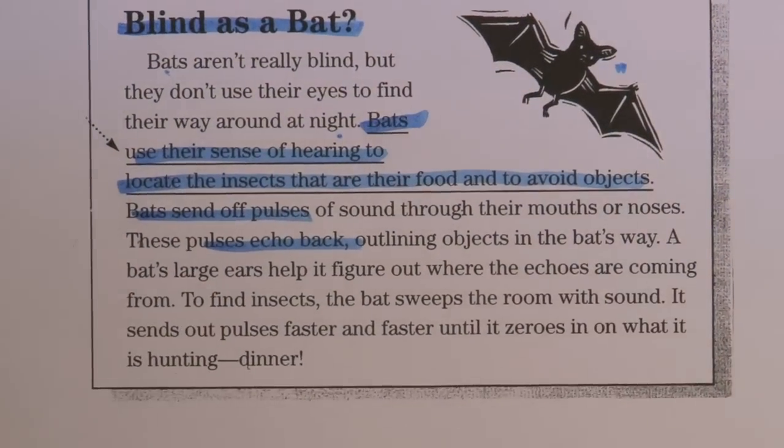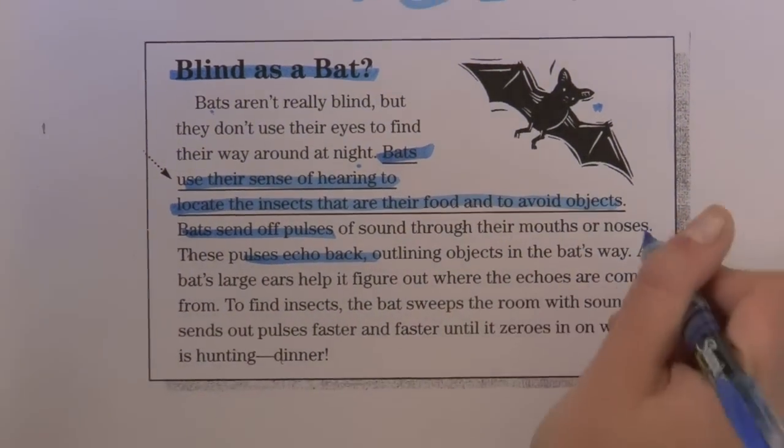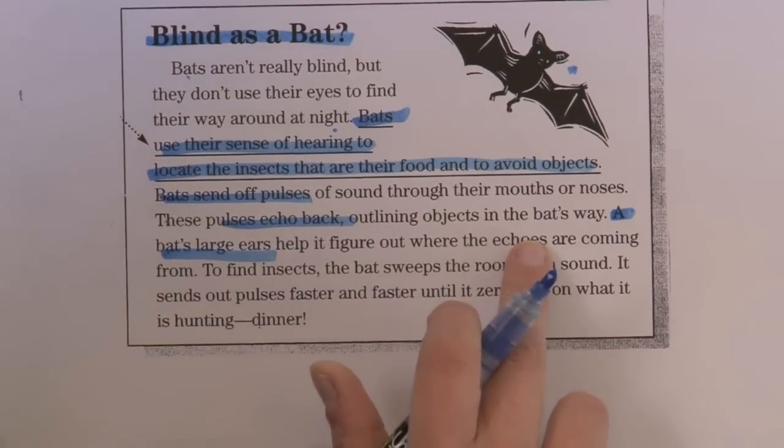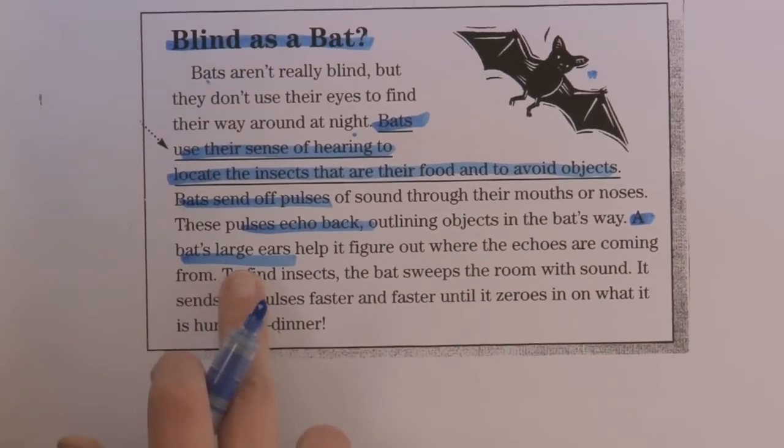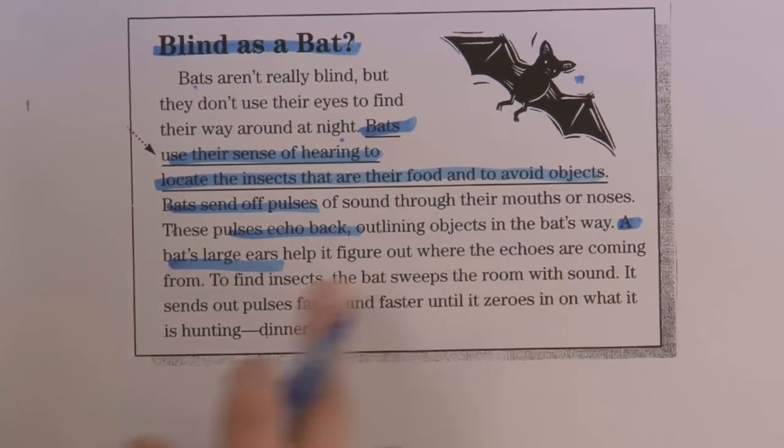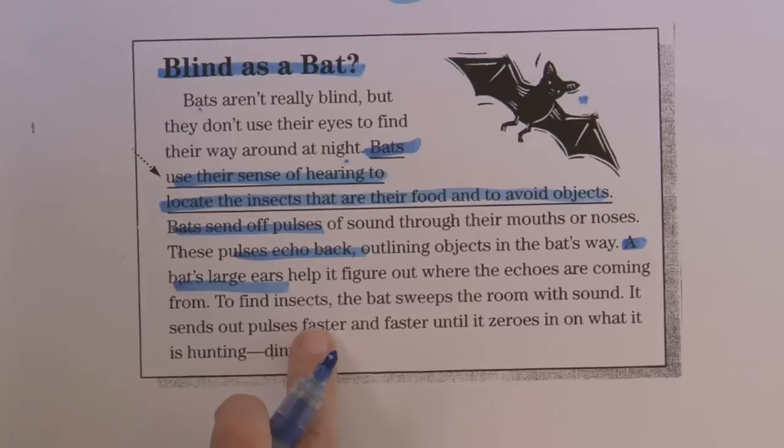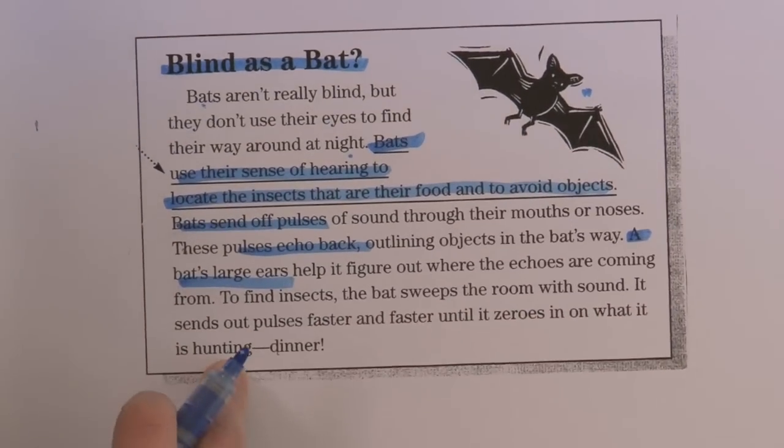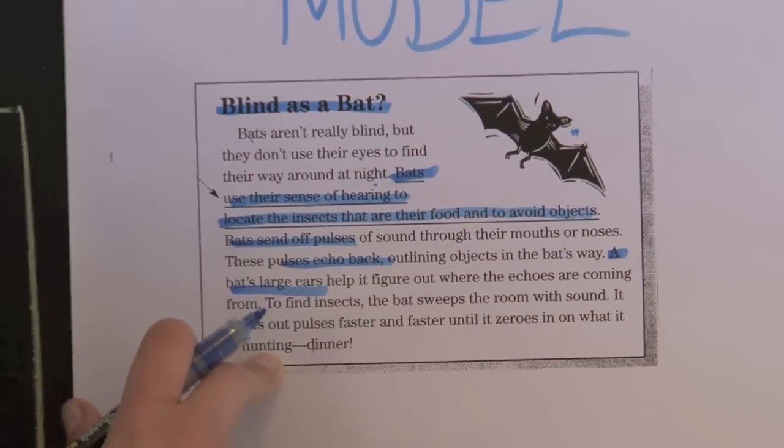A bat's large ears—they're large ears. Another detail. Help to figure out where the echoes are coming from. To find insects, the bat sweeps the room with sounds. It sends out pulses faster and faster until it zeroes in on what it's hunting. Dinner. Bats hungry.